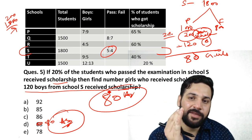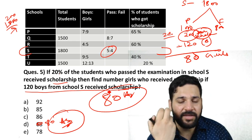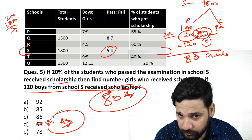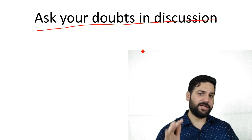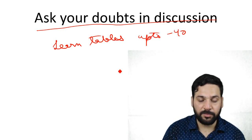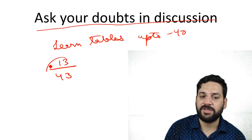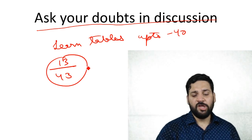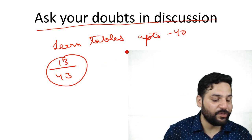This is the level of questions you'll see in exams like RBI Grade B, Bank of India Credit Officer, Scale 2 exams, RRB, and NABARD. If you have any difficulty, ask your doubts in the discussion boards — I'll be there for you. Please learn tables up to 40, and I've already done a video on fractions — you should be able to find approximate percentages. That's all for today. Thank you and have a nice day, bye!